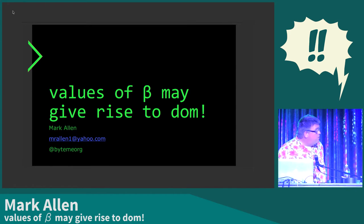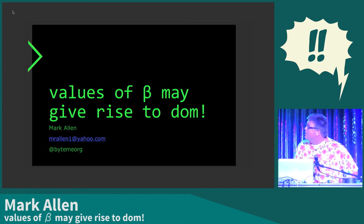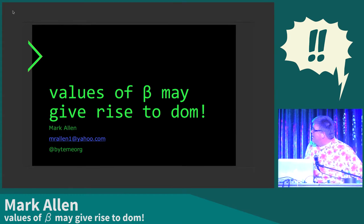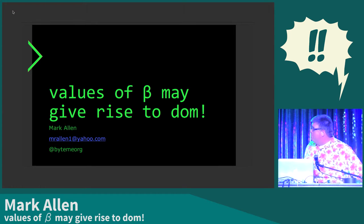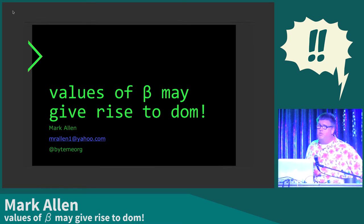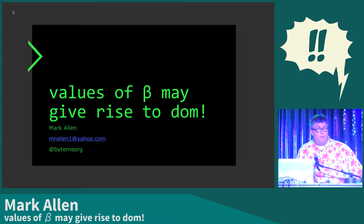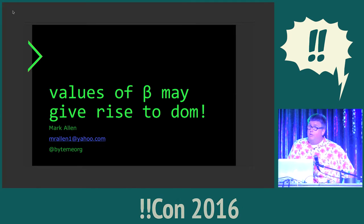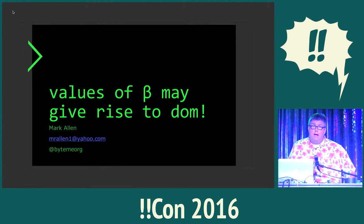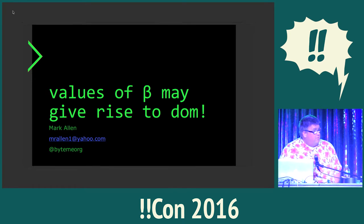My name is Mark Allen, and I'm going to play the part of grumpy old man for you today. The thing I'd like to talk to you about is "values of beta may give rise to DOM." This is probably one of the most obscure and strange error messages that's ever made it into an operating system. We're going to talk about the history of that operating system and also why this error message exists, and a little bit about the aesthetics and ethics of Unix.